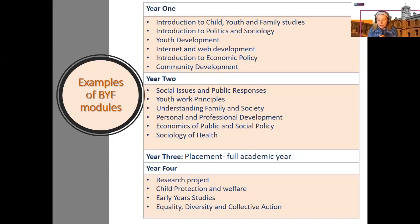In year one, and in each year throughout the program, you undertake 60 ECTS credits. In year one, modules include an introduction to child, youth and family studies, which covers child development, what youth work means, and what we mean by family studies. There is also an introduction to politics and sociology, giving insight into sociology and politics from an Irish and European perspective — all at an introductory stage as you begin year one of your studies.